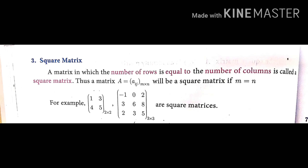The third type is square matrix. A square matrix is one where the number of rows is equal to the number of columns. For example, [1, 3; 4, 5] has order 2×2 — two rows and two columns.